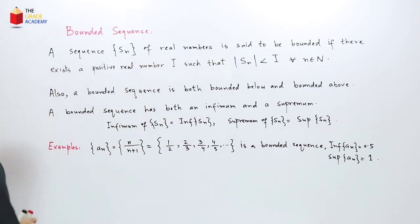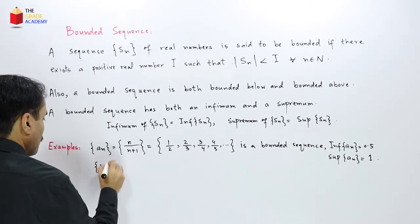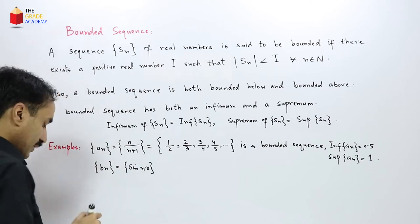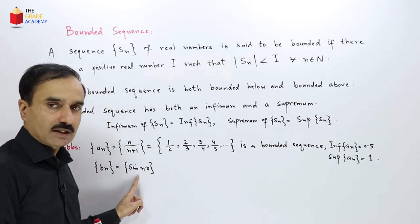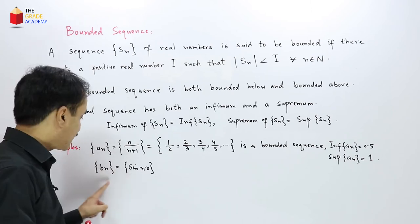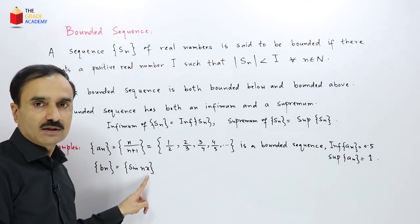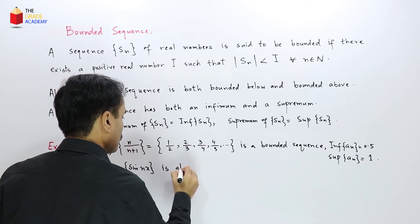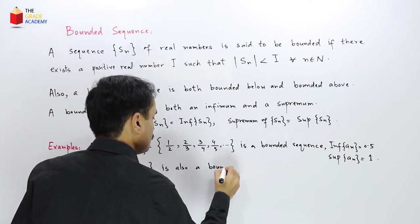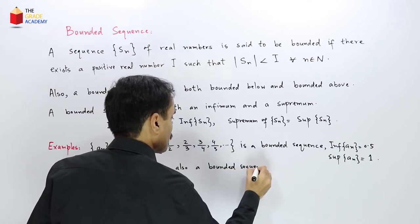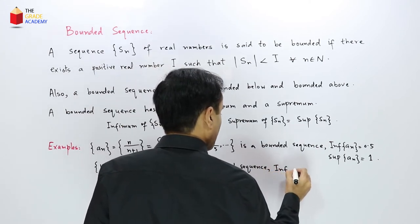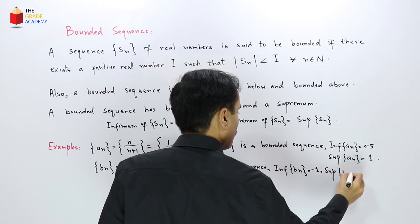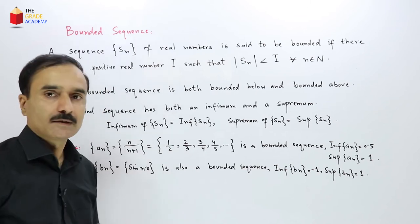Now let's have another example. We have a sequence Bn = sin(nx). This sequence has a highest value of 1 and a smallest value of -1, so this is also a bounded sequence. Its infimum is -1 and supremum is 1.